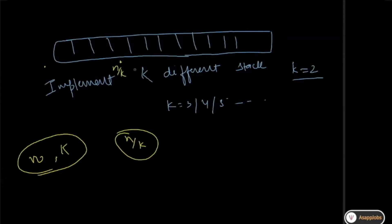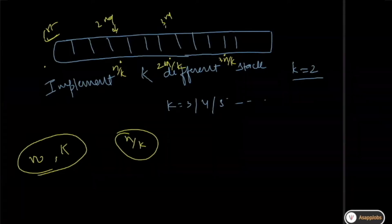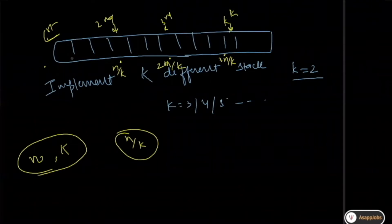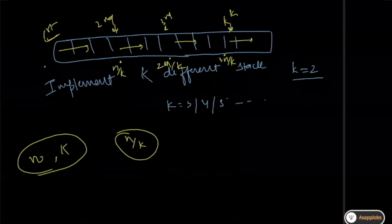So the first boundary is at n/k, the next at 2n/k, then 3n/k, and so on. Basically you take the size of the array and divide it by k. Your first stack starts here, the second starts here, and the final kth stack starts here. Each stack moves in its own direction — this one this way, this one this way, and so on. The core concept remains the same.